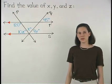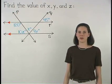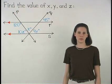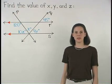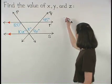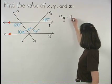Since we know that if two parallel lines are cut by a transversal, then corresponding angles are congruent, we can set up the equation 9y equals 45.